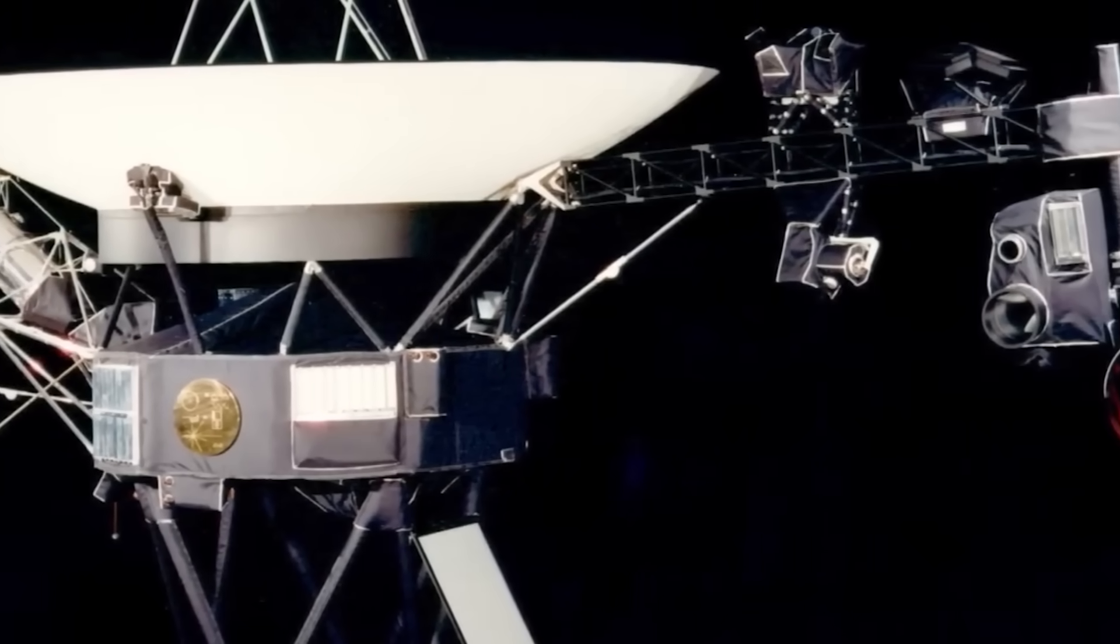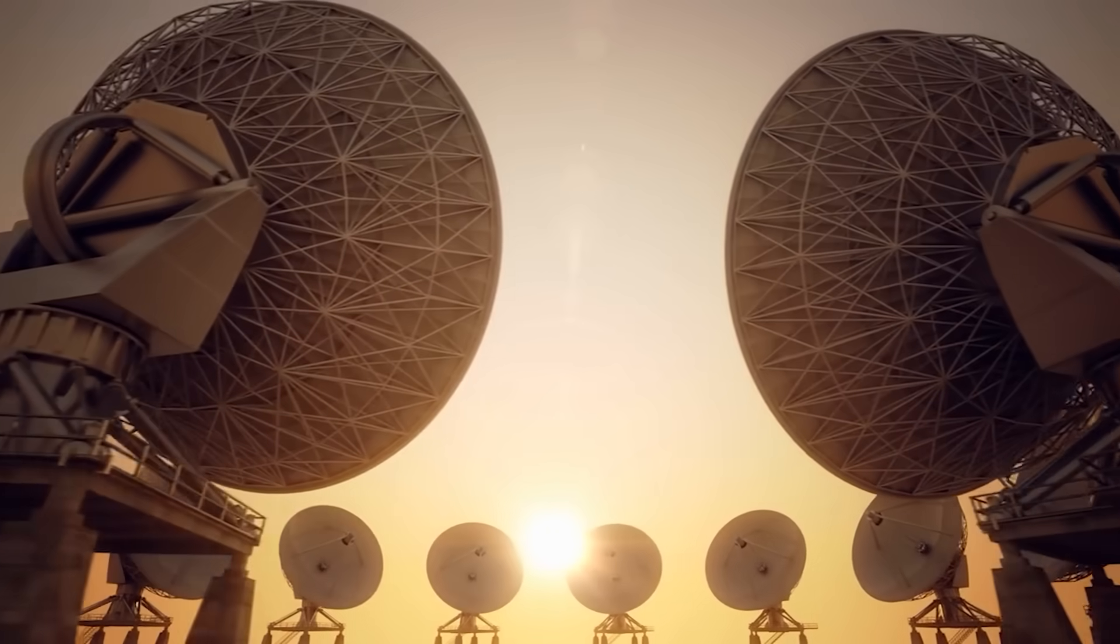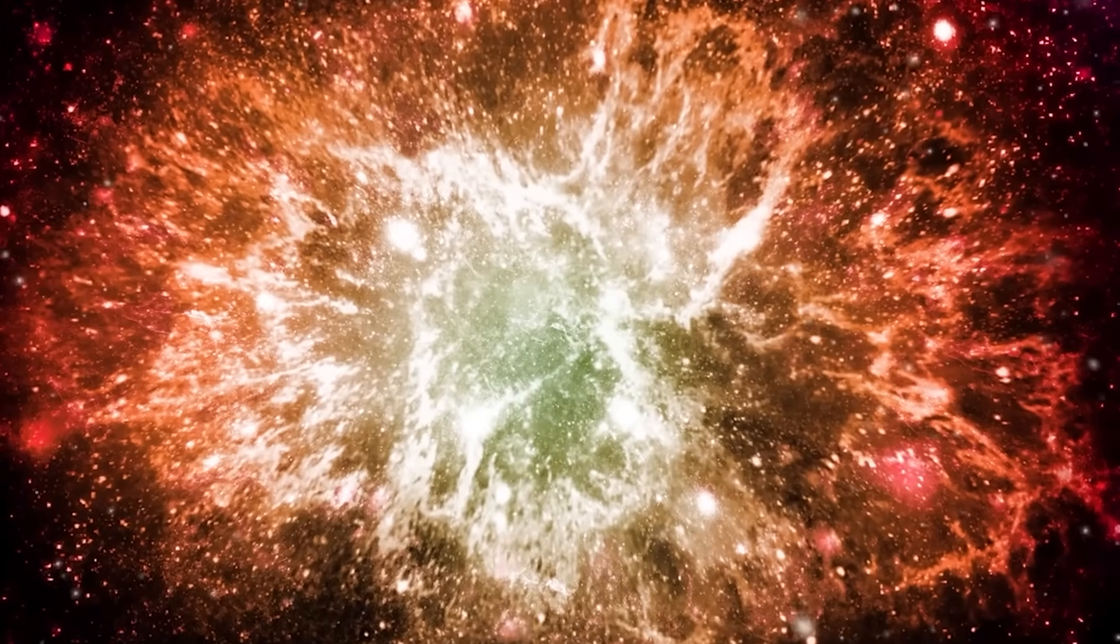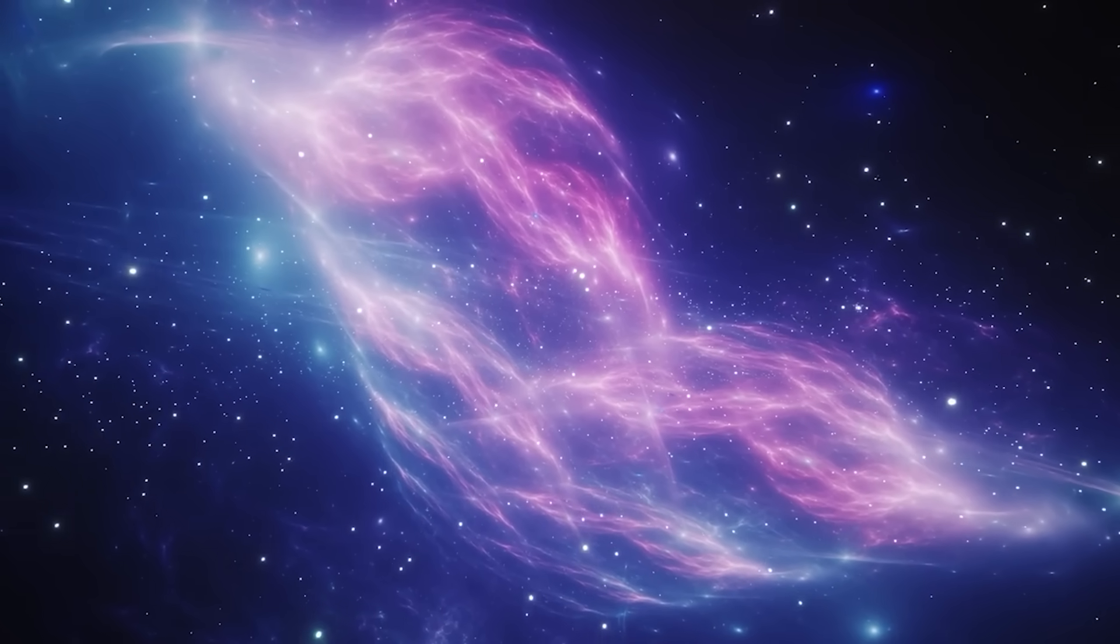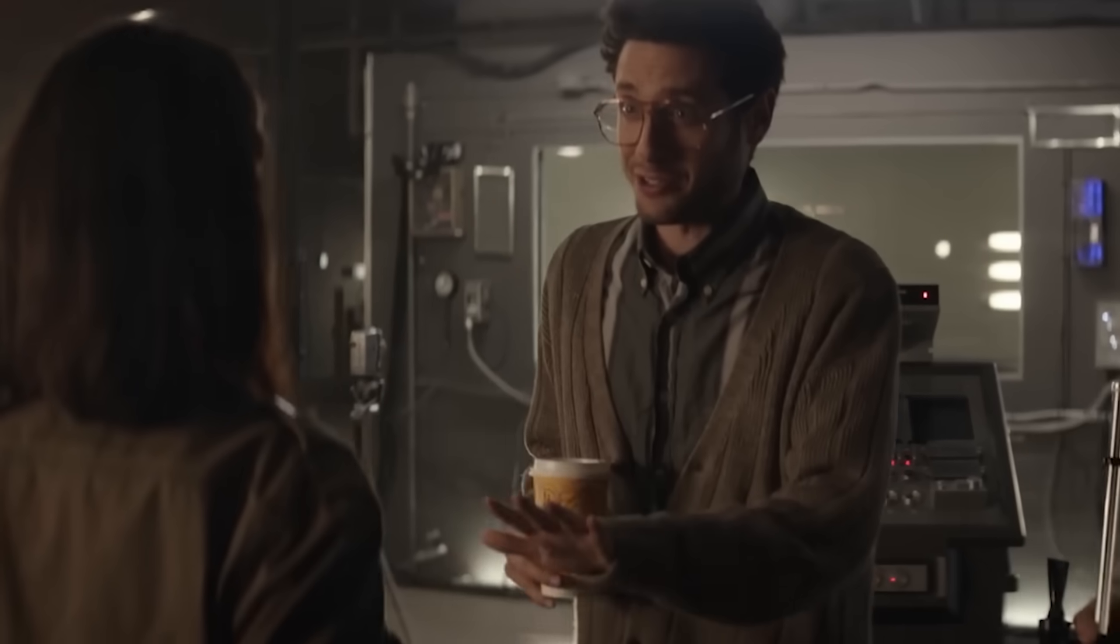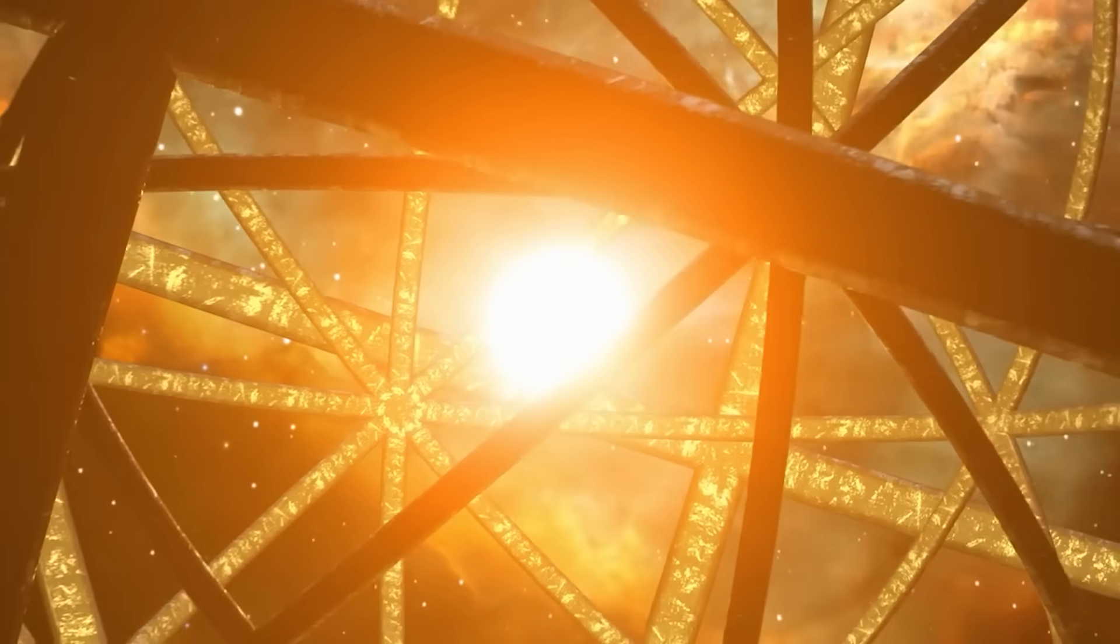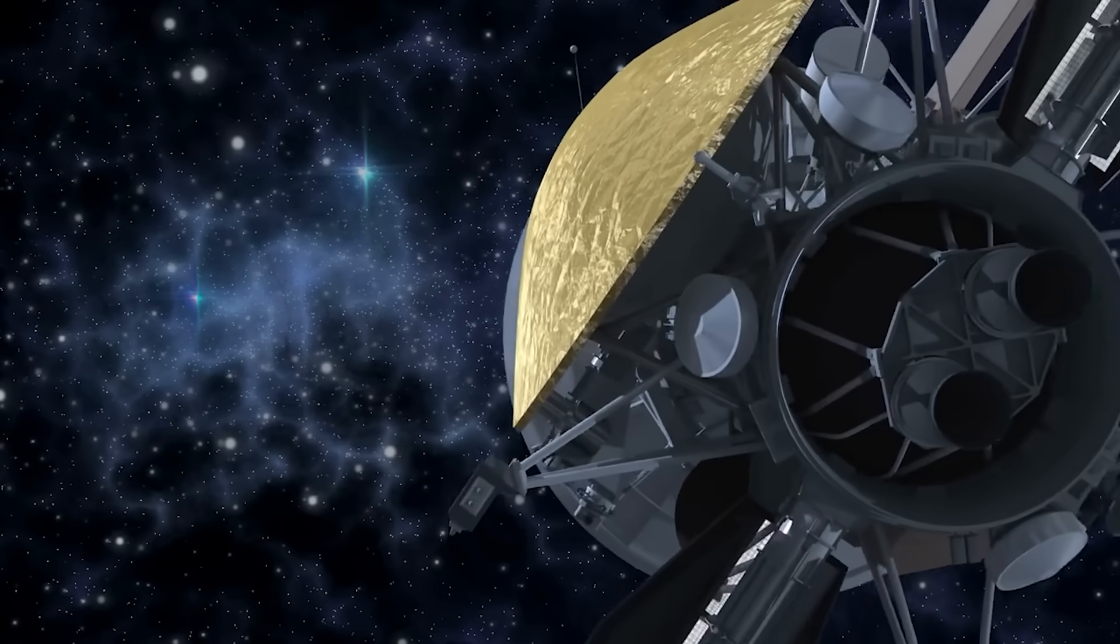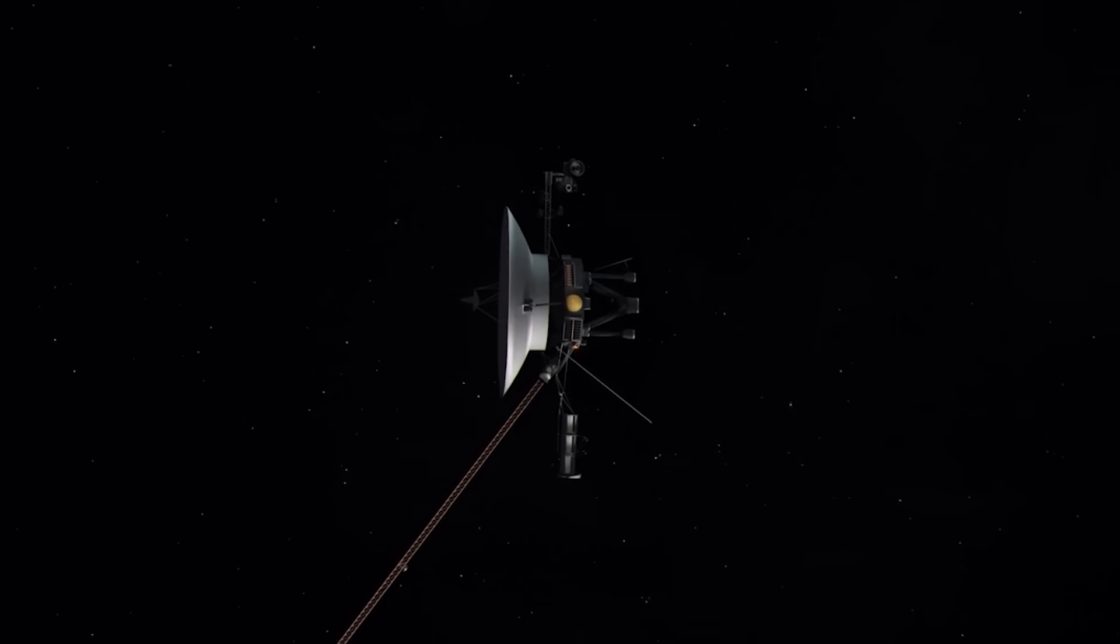Some theorized that the anomaly could be a remnant of a long-lost civilization. One that no longer existed, but had left automated sentinels drifting through the stars. These beacons, passive but aware, might be set to observe and evaluate. Others posited an even more unsettling idea. That the object was alive. Not in the biological sense, but conscious in ways humans cannot comprehend. Perhaps a creature composed of electromagnetic fields. Born not of carbon and water, but of light and gravity. In this framework, Voyager 1 had not encountered a machine, but a being. One that sensed the spacecraft as a tickle in its vast awareness.